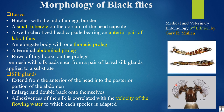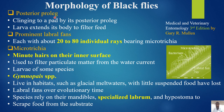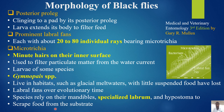The posterior proleg clings to a pad, and the larva extends its body to filter feed. Prominent labral fans, each with about 20 to 80 individual rays, bear growing microtrichia — minute hairs on the inner surface — used to filter particulate matter from the water current. Larvae of some species, such as those of the genus Gymnopais, live in glacial meltwater habitats with little suspended food and have lost their labral fans over evolutionary time, instead relying on specialized mandibles, labral structures, and hypostomae to scrape food from the substrate.